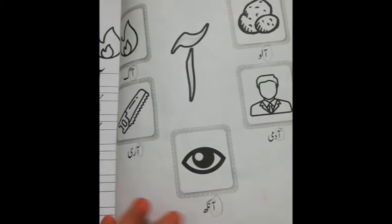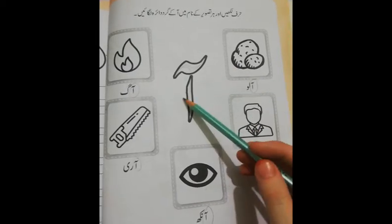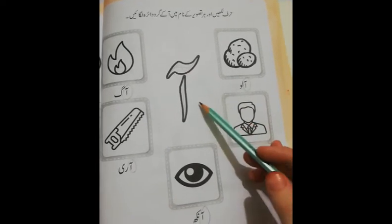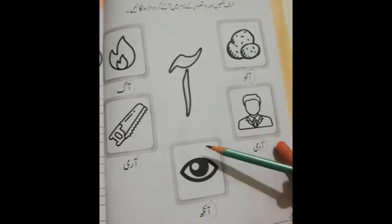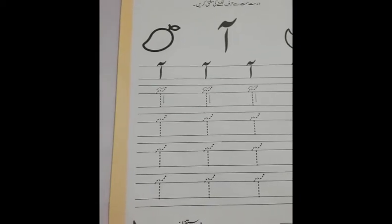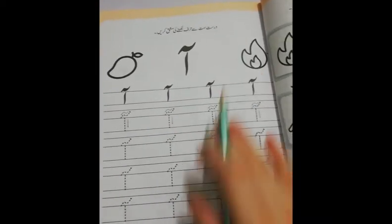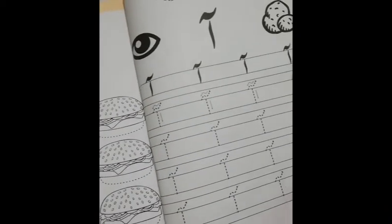So, my dear kids, now come to the book and open page number 13. Dear children, do revise with me. Alif mad aah se aalu. Alif mad aah se aankh. Alif mad aah se aadmi. Alif mad aah se aari. Alif mad aah se aankh. Okay. Now come to page number 14. Dear children, you have done writing practice on this page. You've done coloring. Very good. Now come to page number 15.